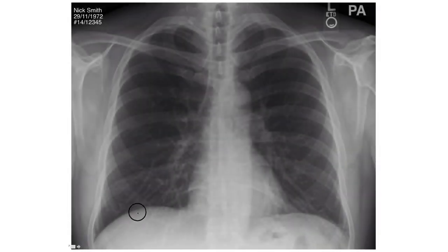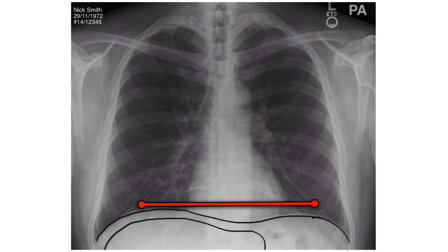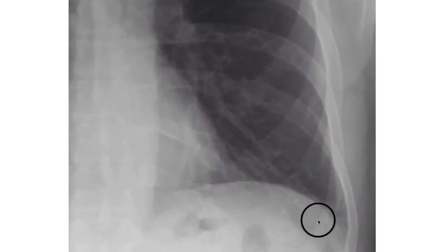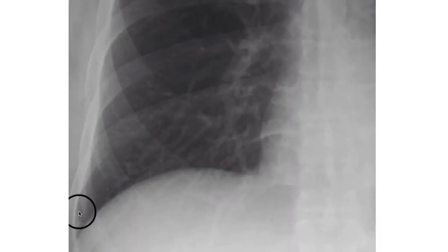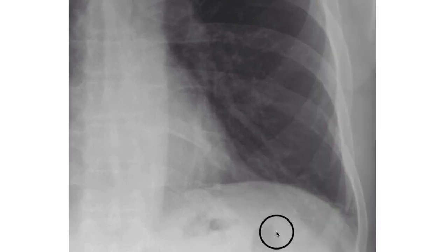D stands for diaphragm. Each side of the diaphragm should appear as a dome with a sharp white edge against the adjacent black lung. The right hemidiaphragm is normally higher than the left by about 1–3cm due to the liver underneath. The costophrenic angles are where the diaphragm meets the ribs laterally, and the cardiophrenic angle is where the heart meets the diaphragm — these angles should be clearly defined. Often you will see the gastric air bubble under the left hemidiaphragm.